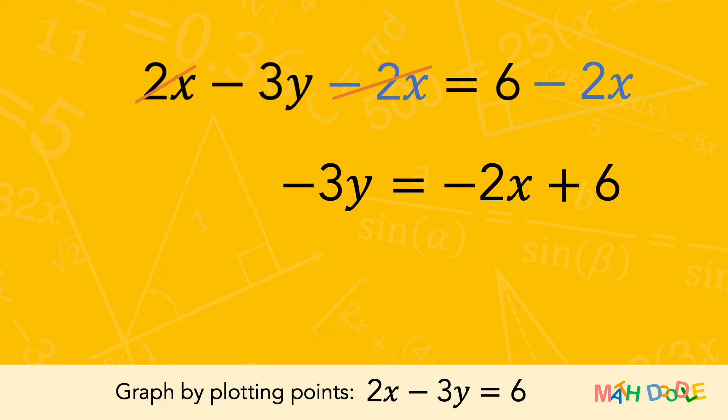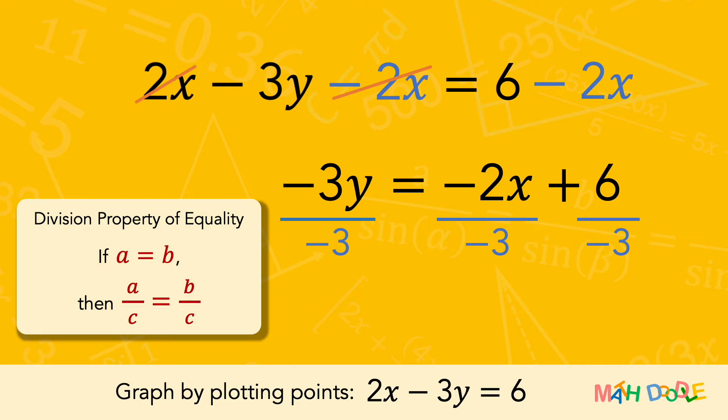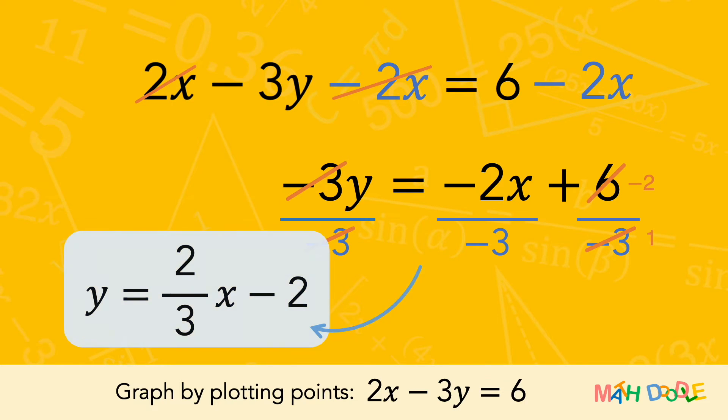Now, to solve the equation for y, we are going to eliminate minus 3 in front of y. To do this, let's divide both sides of the equation by minus 3. So, we are now going to work on the equation y equals 2 thirds x minus 2.